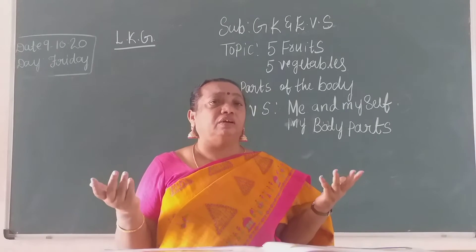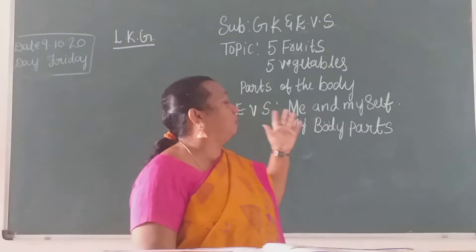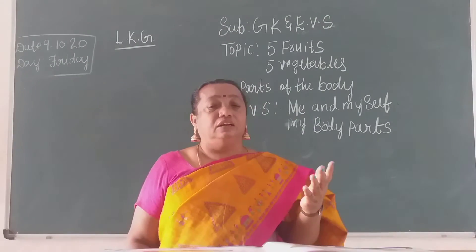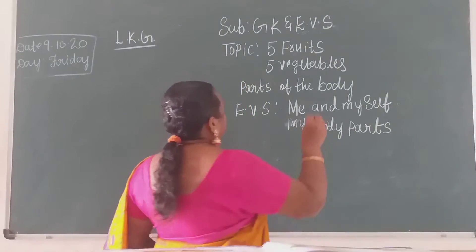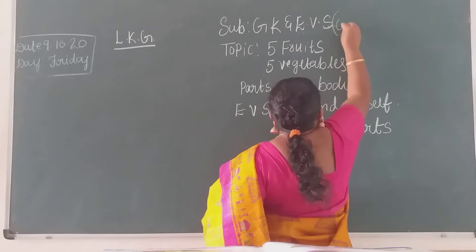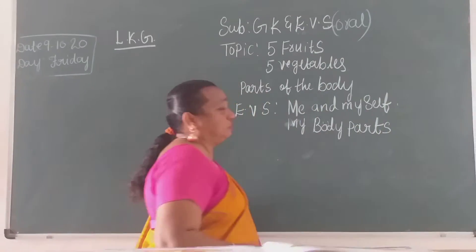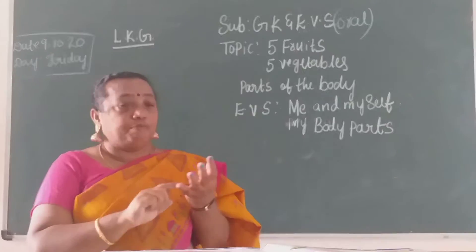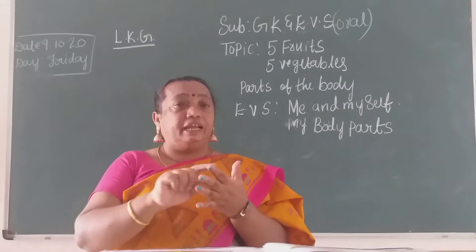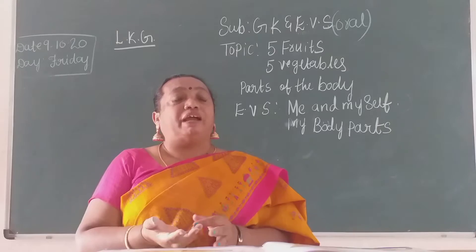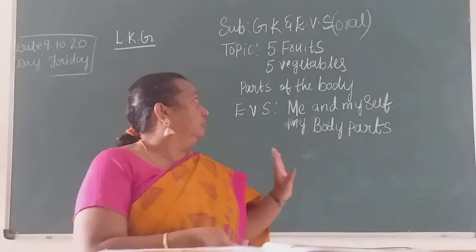Which fruit name you know, you can tell children. 5 fruits you have to tell orally, not for writing children. These are oral. Say fruits name: apple, orange, banana, grapes, mango, pineapple. Any 5 fruits you can say children.